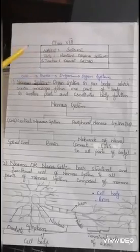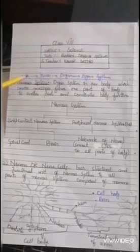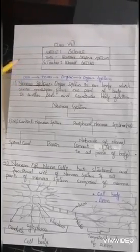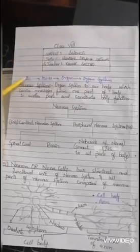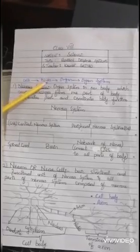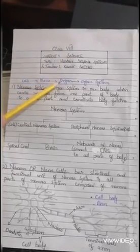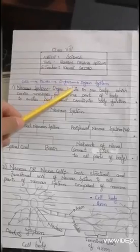Firstly, what is an organ? As you all know, our body is composed of millions and trillions of cells. Same types of cells combine to make tissues. Tissues combine to make organs, and different organs combine to make an organ system.